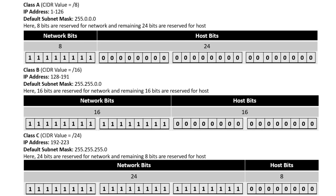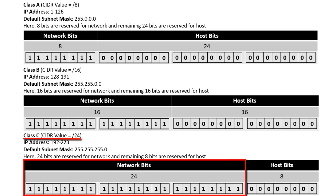Now let's move on to Class C. Class C IP address starts from 192 to 223. Its default subnet mask is 255.255.255.0 and the default CIDR value is 24, because the total number of network bits in a Class C IP address is 24.